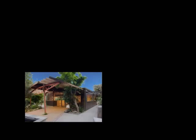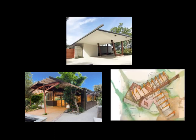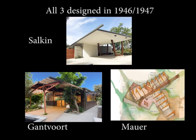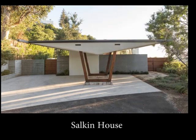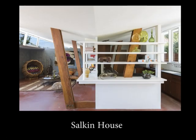The house has similarities with two other designs by John Lautner that were constructed around the same time: the Solking and Mauerhaus. Both houses have a unique and distinctive roof construction that forms the main design element and is part of the interior.